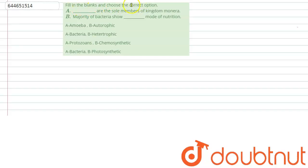...is fill in the blanks and choose the correct option. Dash A and B are the sole members of Kingdom Monera. Majority of bacteria shows dash mode of nutrition. So here, first of all, we should...